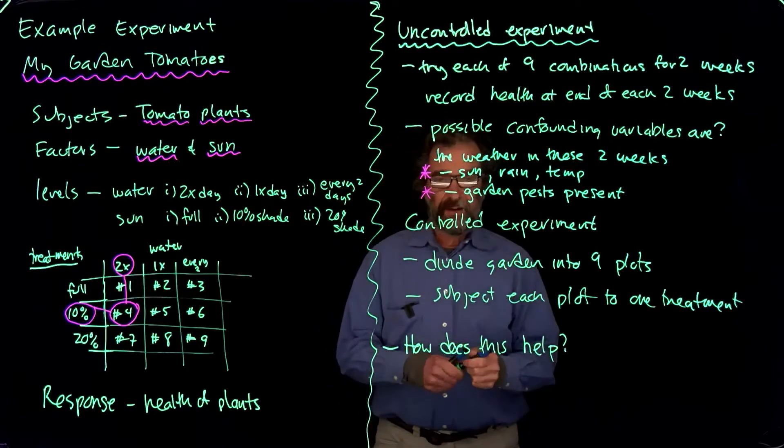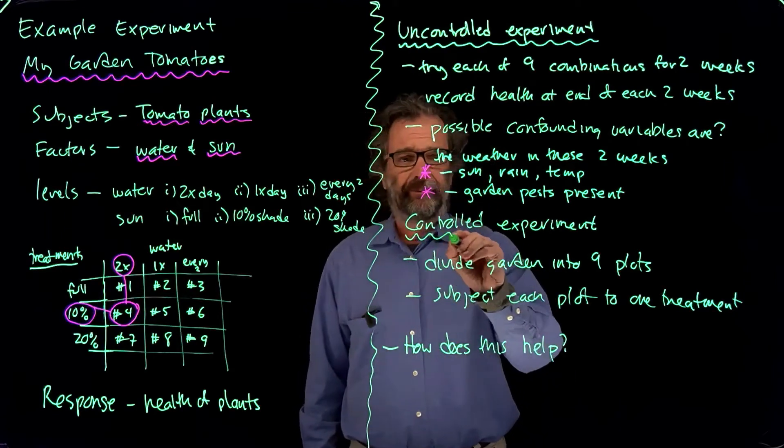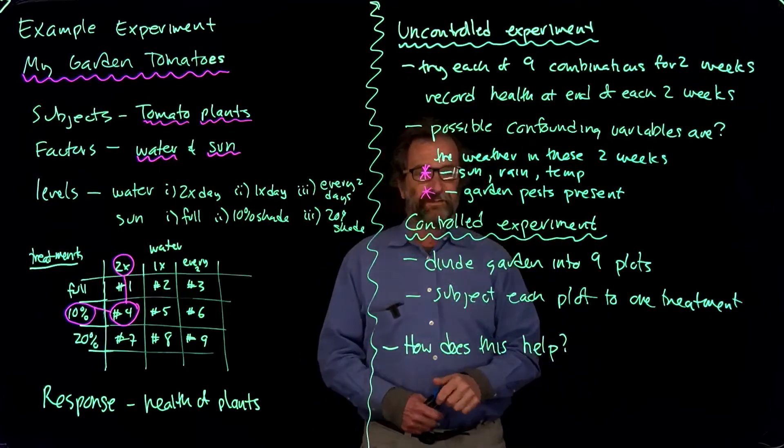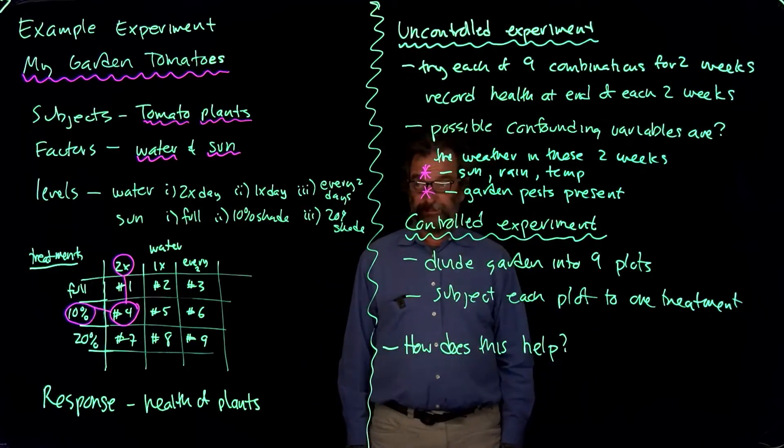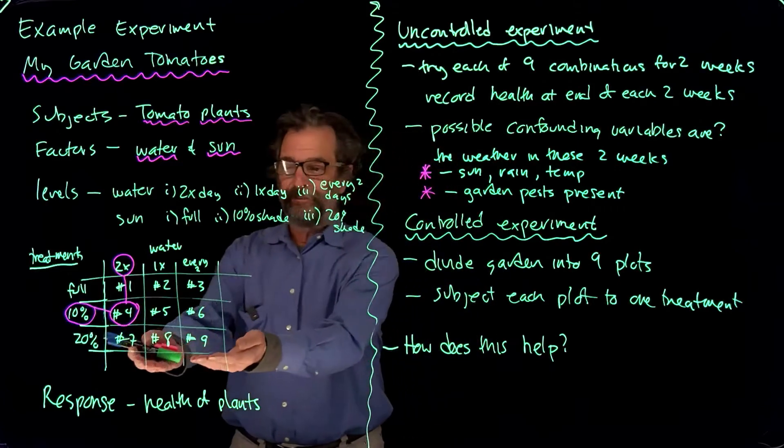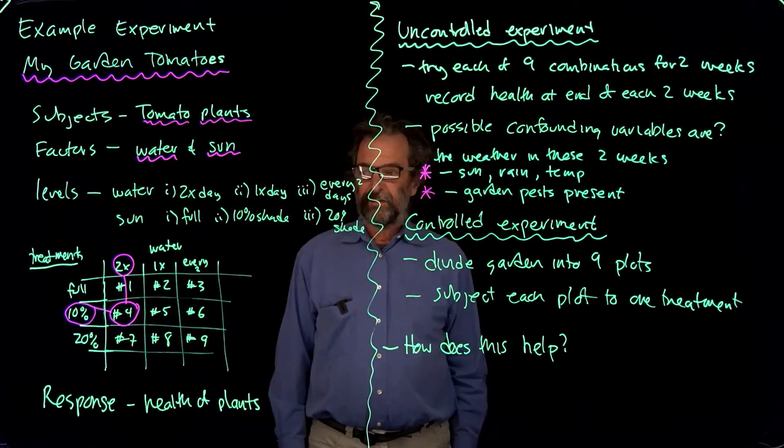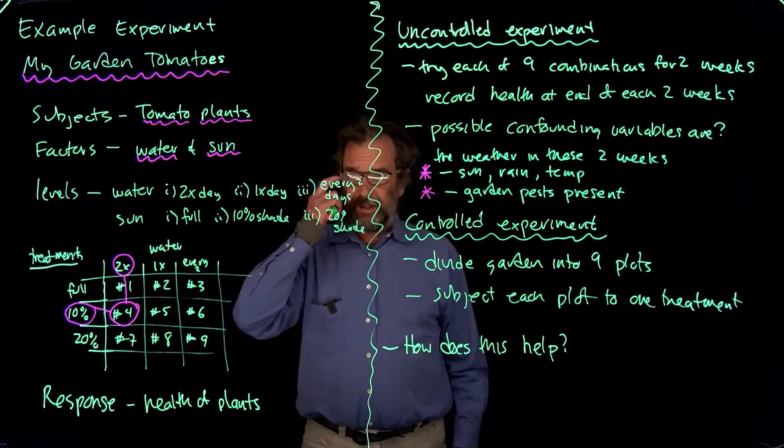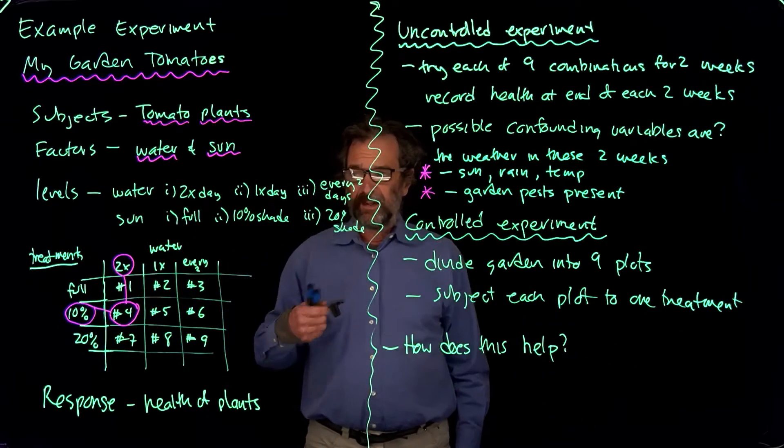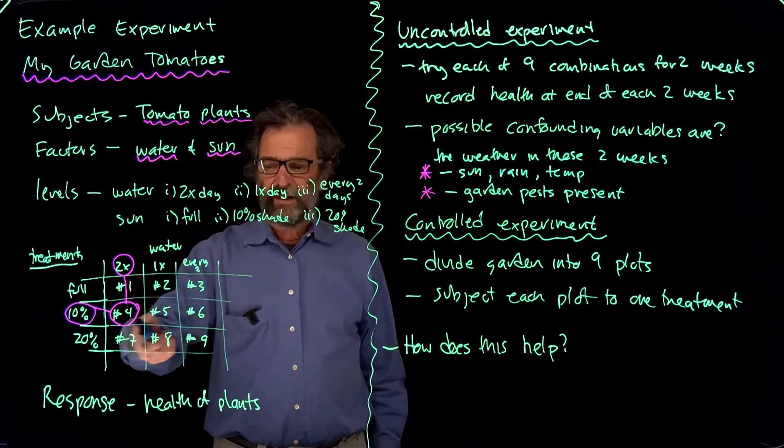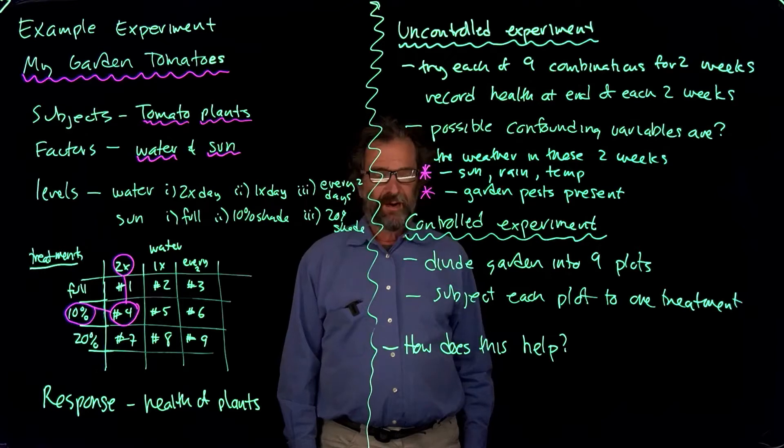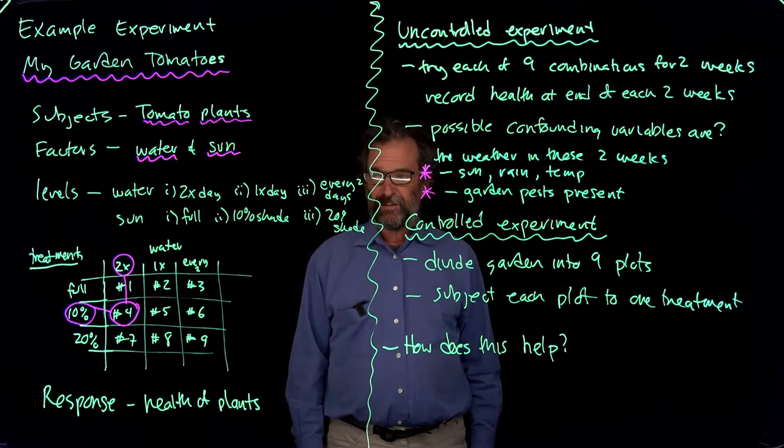So we could try doing a controlled experiment. The controlled experiment would be to take the whole garden, divide it into nine plots similar to this pattern here, and subject each plot to one of the treatments. So I take my garden, it's like 35 by 20, it's big, and divide it up into nine pieces. I have raised beds. I could make nine different raised beds in different corners of the garden and then subject them to different watering by setting my timers differently for every box.